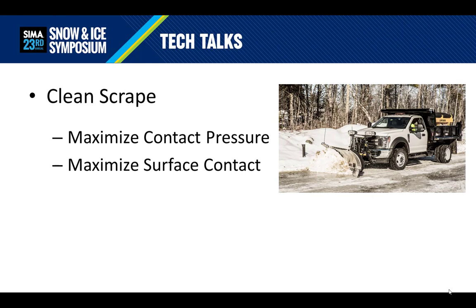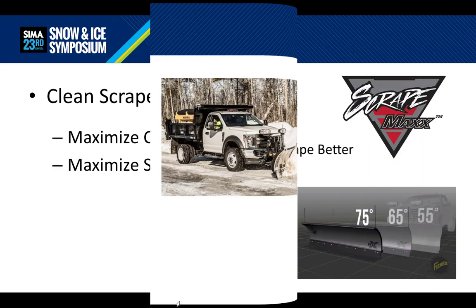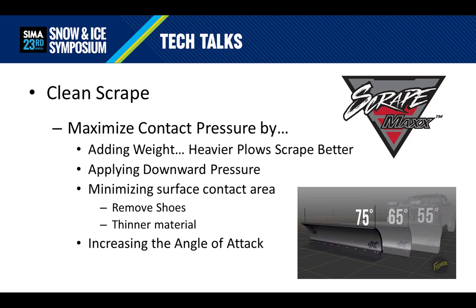Shifting gears, let's talk about a clean scrape strategy. Within this strategy, we're trying to maximize contact pressure and maximize surface contact. Maximizing contact pressure can be achieved in many ways. Adding weight is the simplest — heavier plows simply scrape better. A second way is by adding downward pressure; systems such as the ScrapeMax feature by SnowEx hydraulically add downward pressure to the system. A third way is by minimizing surface contact area — removing shoes or using thinner material are quick ways to increase the pressure on the cutting edge, improving overall scraping performance.